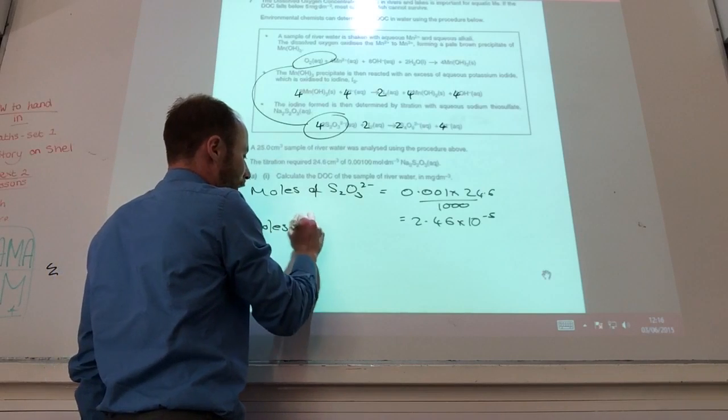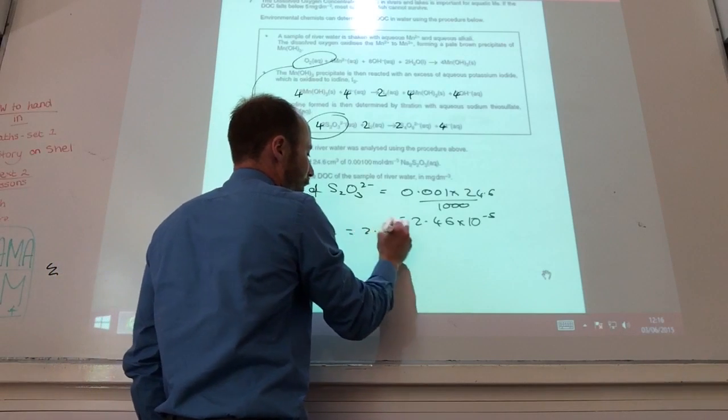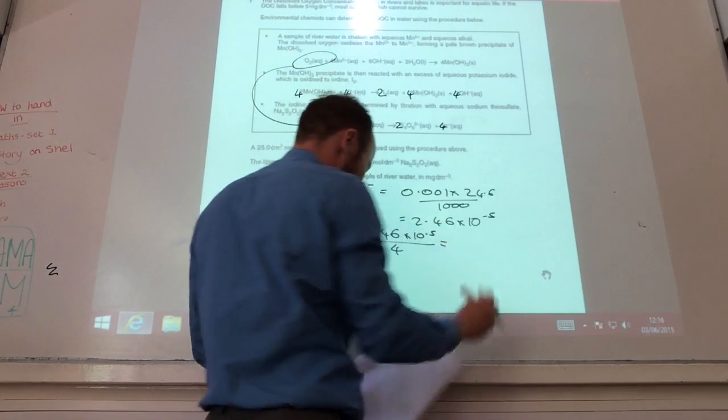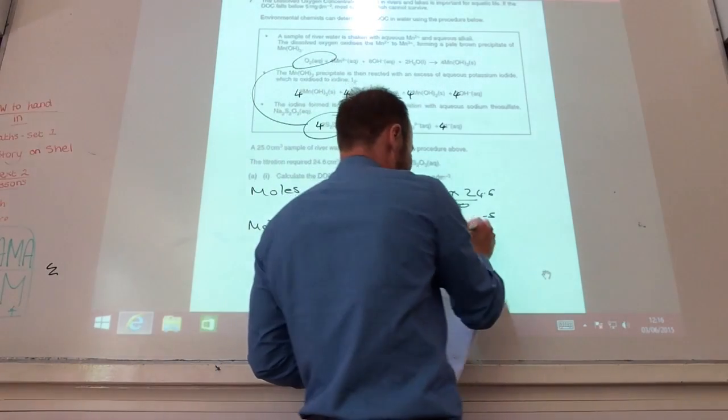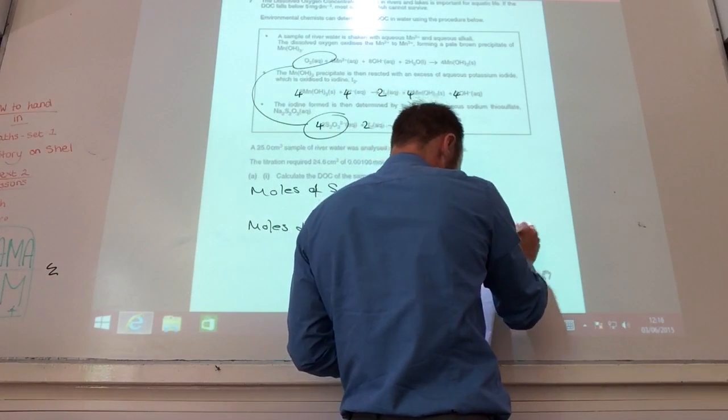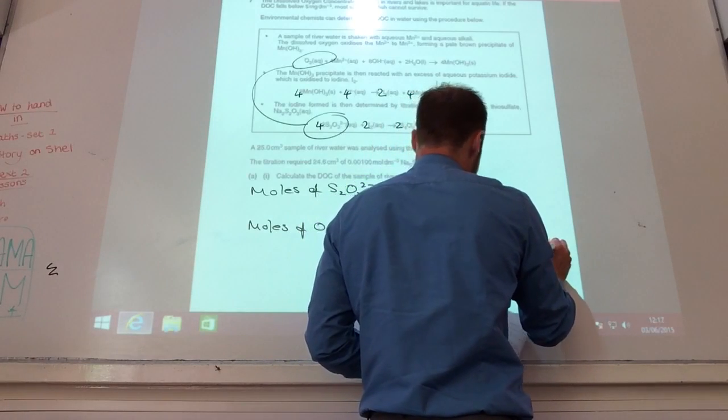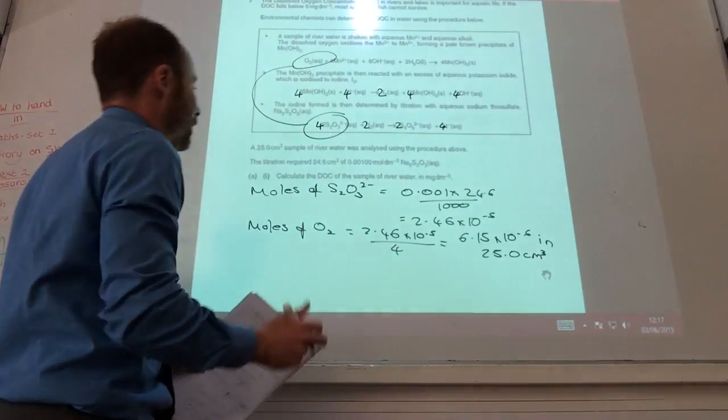So moles of O₂ is 2.46 times 10 to the minus 5 divided by 4, which gives you 6.15 times 10 to the minus 6. That was in 25 centimeters cubed.